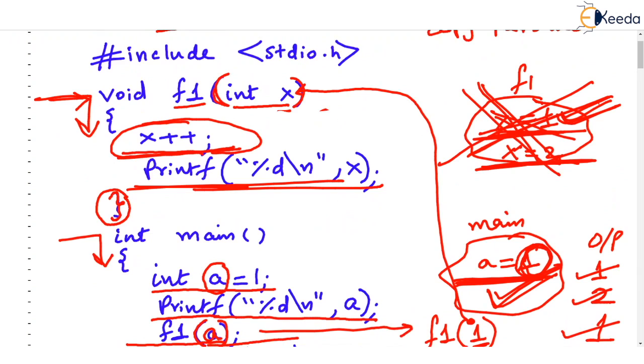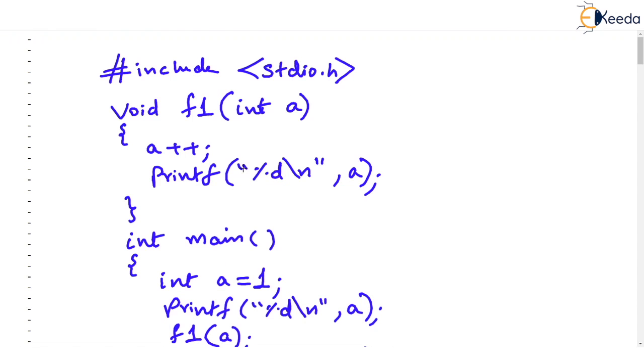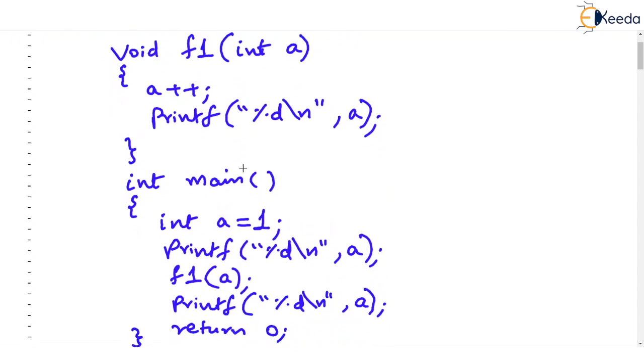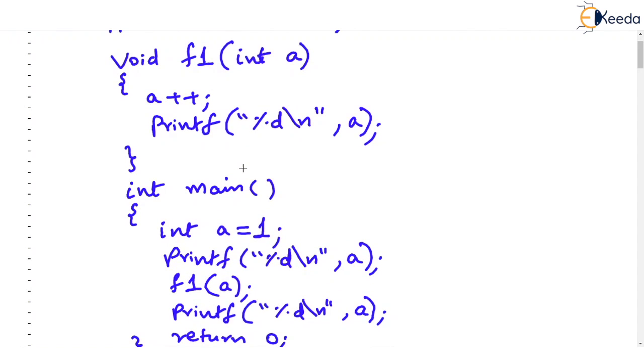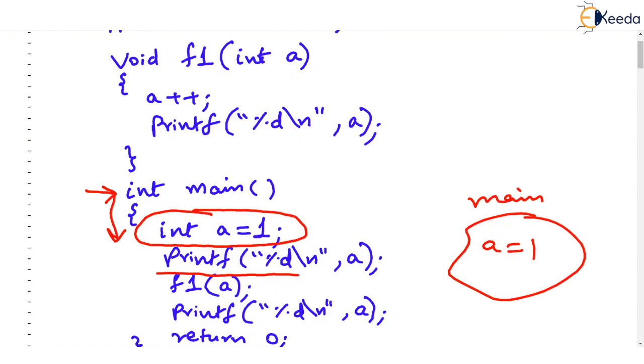As another example here, on the fresh slide, have a look at this code. This is very similar, rather entirely similar to the previous code. Let's try to run this code on paper and see what will be the output. Obviously, main starts first. Main has a variable int a equal to 1. Note, it is local variable. Only main has permission on a. So main is started and main is having a equal to 1. Next line, print the value of a. Obviously, the first output will be 1.